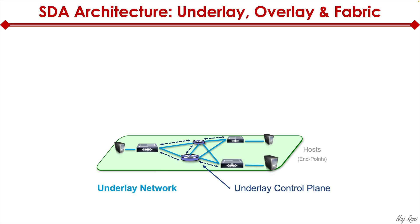When it comes to SDA, we have the underlay network — that's the network infrastructure, the physical devices: all the switches, routers, firewalls, wireless access points, wireless LAN controllers, and all the end hosts like servers connected to our network. We also have the underlay control plane concept — the routing protocol, which in the case of SDA is ISIS, or could also be BGP depending on the network.